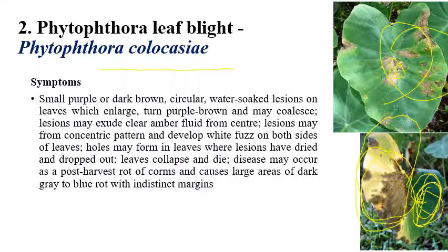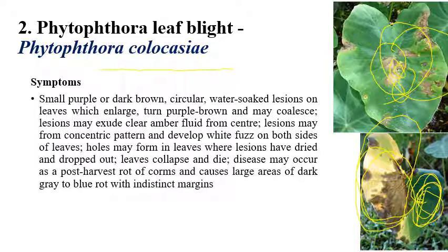In severe stages, yellowing and drying of leaves can be observed, along with shot holes on the leaves. In later stages, the leaves may collapse completely.